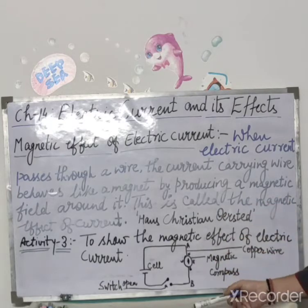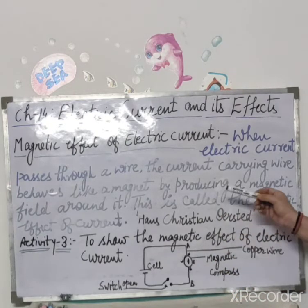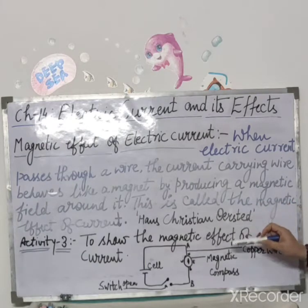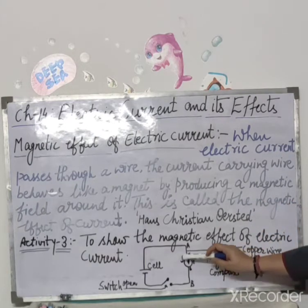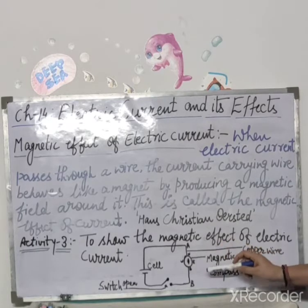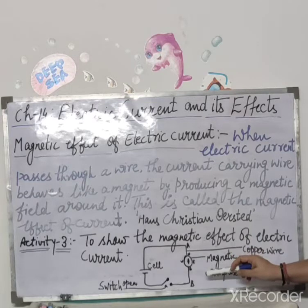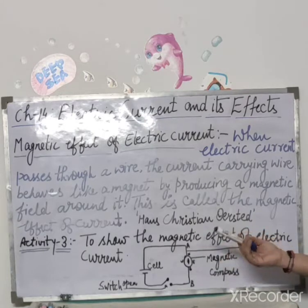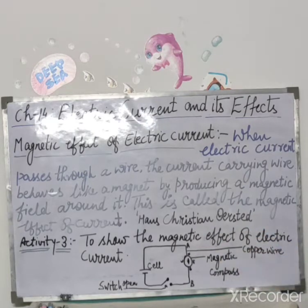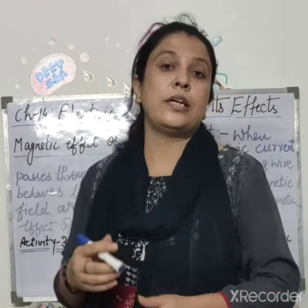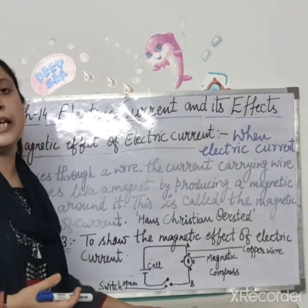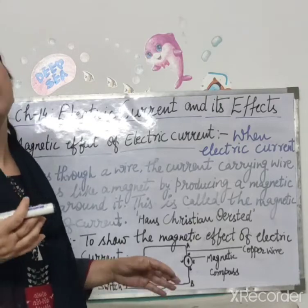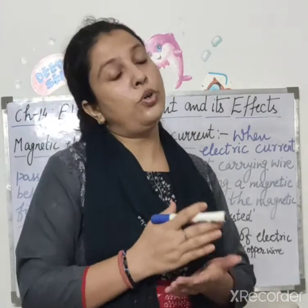Hans Christian Oersted naam ke ek Danish scientist hain, jinhone notice kiya ki jo compass hota hai — aap is picture mein dekh pa rahe honge, yeh ek compass ka hi hai — to compass ki jo needle hoti hai, woh har time jab usse current pass hota tha, to usme deflection hota tha. Thik hai? To Hans Christian Oersted jo scientist hain, unhone hi sabse pehle is cheez ko notice kiya ki jab current pass hota hai to compass ki needle mein deflection hota hai.